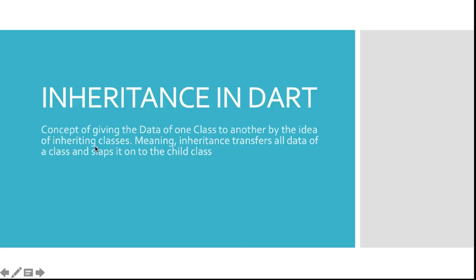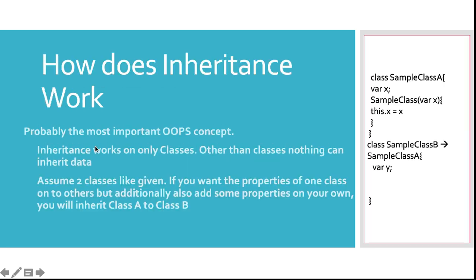So we're going to be doing this through the slides in Dart specifically. Inheritance in Dart is probably one of the most important concepts you will learn in any OOP programming language. The idea is that you are going to inherit some data attributes from one class to another. It's very simple — there's a sample class A and a sample class B.